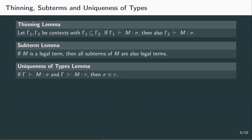This uniqueness of types lemma tells us that every term has a unique type with respect to a context gamma, if it has one at all.